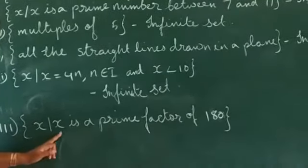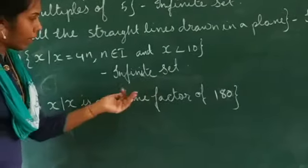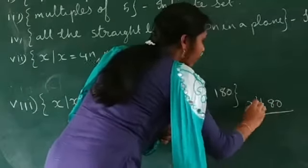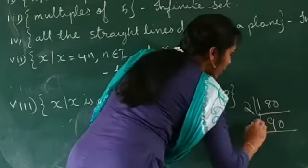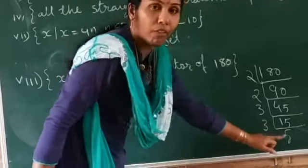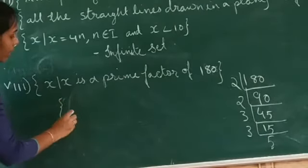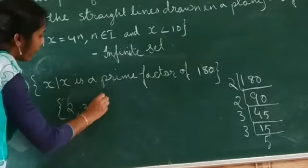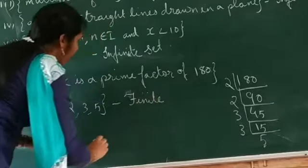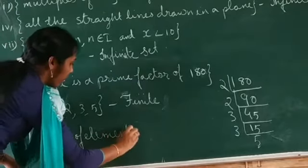Next, question 8: set of all x such that x is a prime factor of 180. This is a finite set, but for finding out the elements of this set, we have to do the prime factorization of 180. Dividing by 2 we get 90; again by 2 we get 45; by 3 we get 15; again by 3 we get 5. So 2, 3, and 5 are the distinct prime factors of 180. Therefore, we can write this set in roster form as {2, 3, 5}. It is a finite set and the number of elements n(X) is equal to 3.